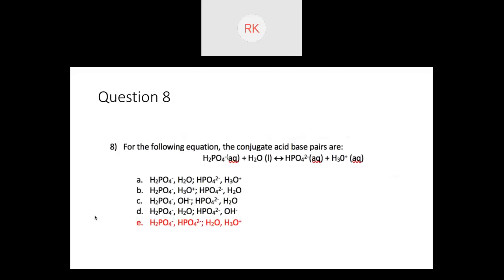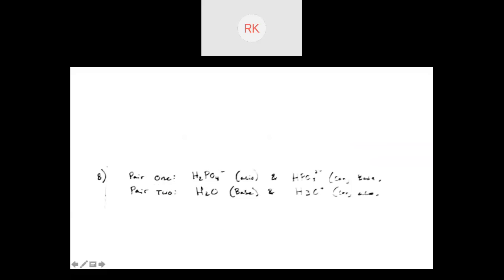Question eight asks for conjugate acid-base pairs. The answer is E: dihydrogen phosphate with hydrogen phosphate is one pair, and water with hydronium is the other. Dihydrogen phosphate acts as our acid; once it loses H⁺, hydrogen phosphate (HPO₄²⁻) acts as the conjugate base. Water acts as a base by accepting a proton, becoming hydronium H₃O⁺, which is the conjugate acid.